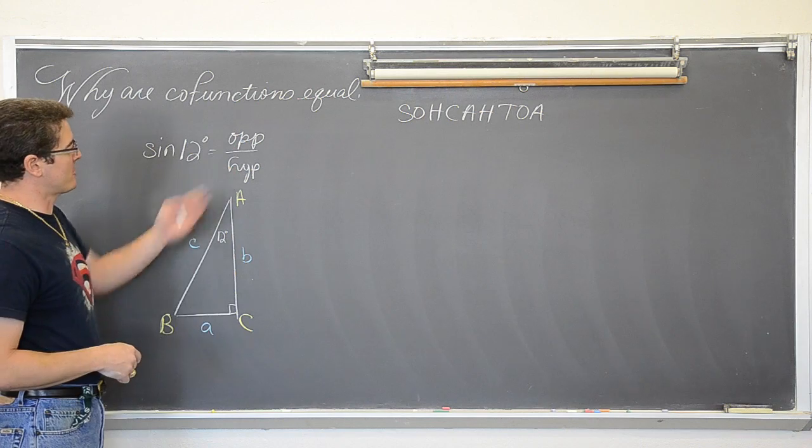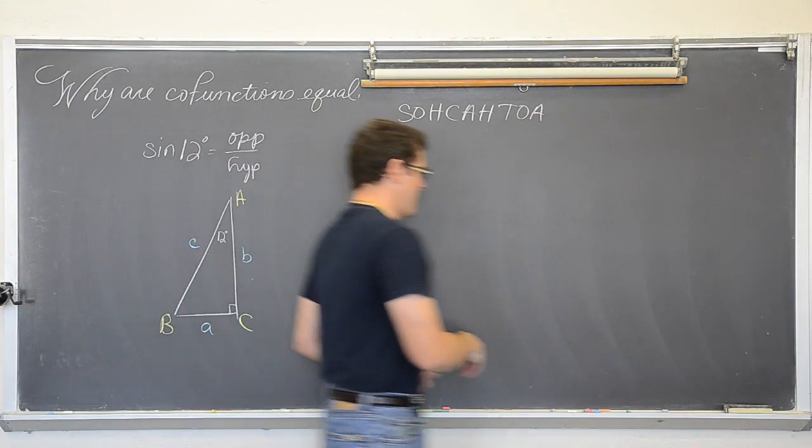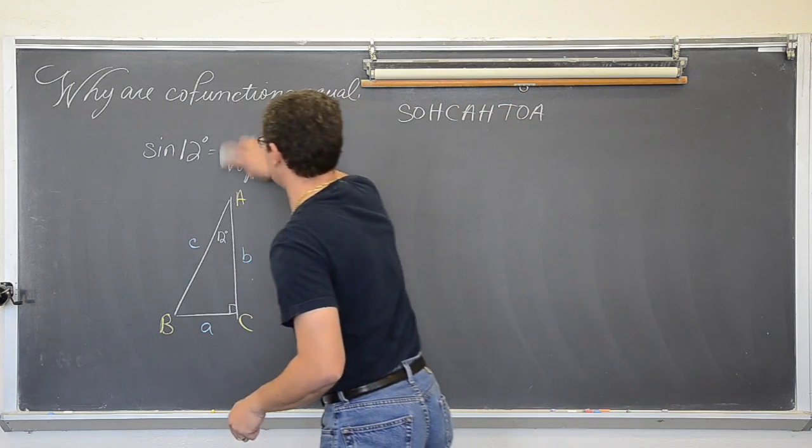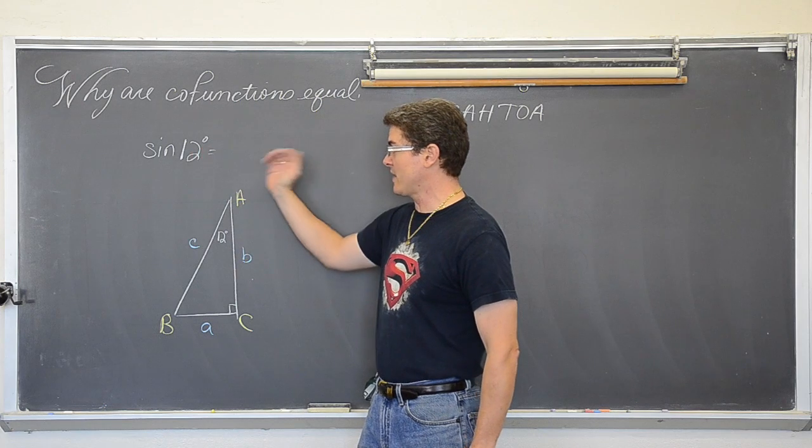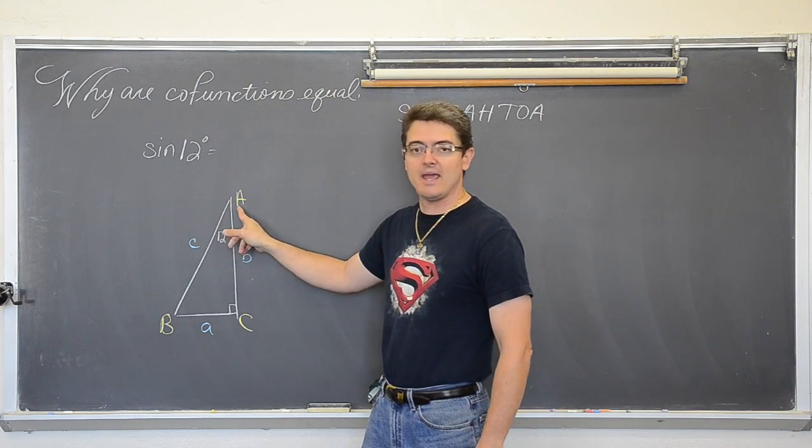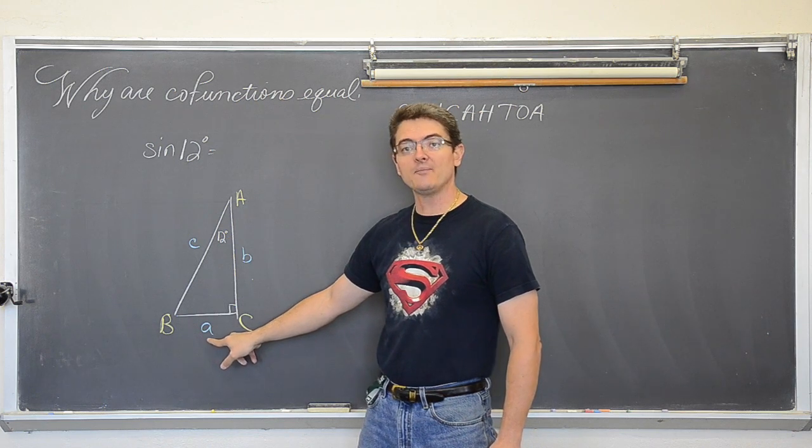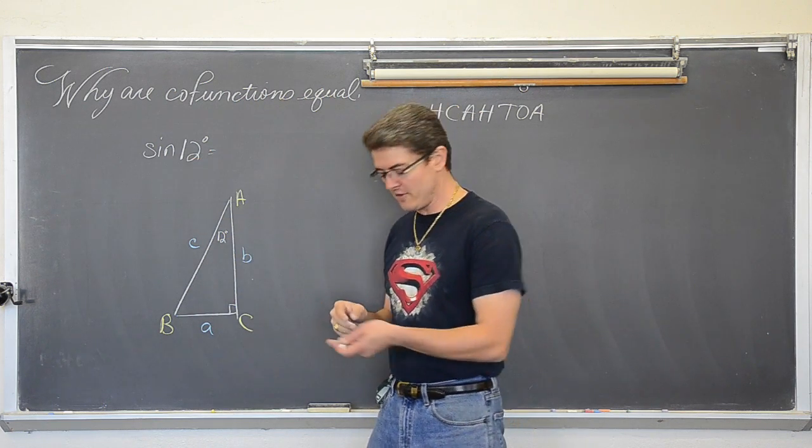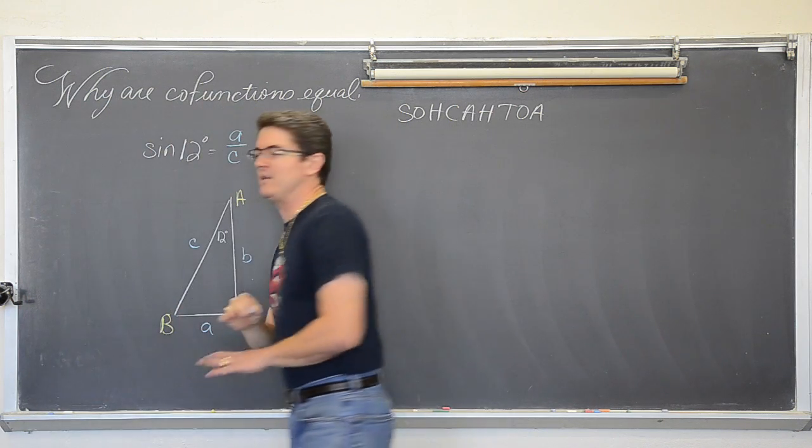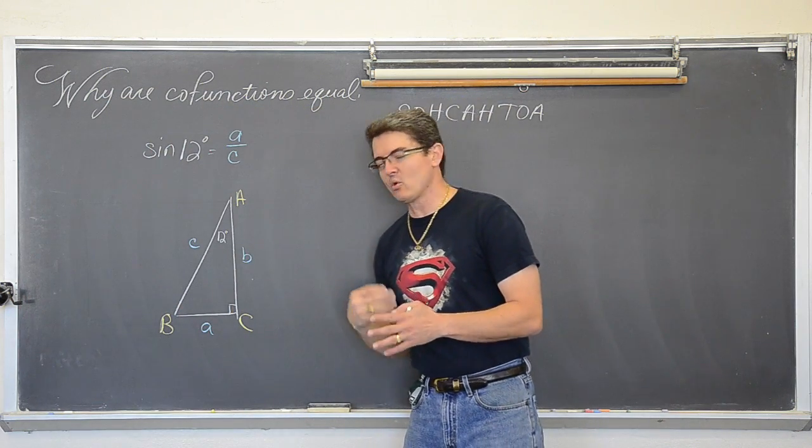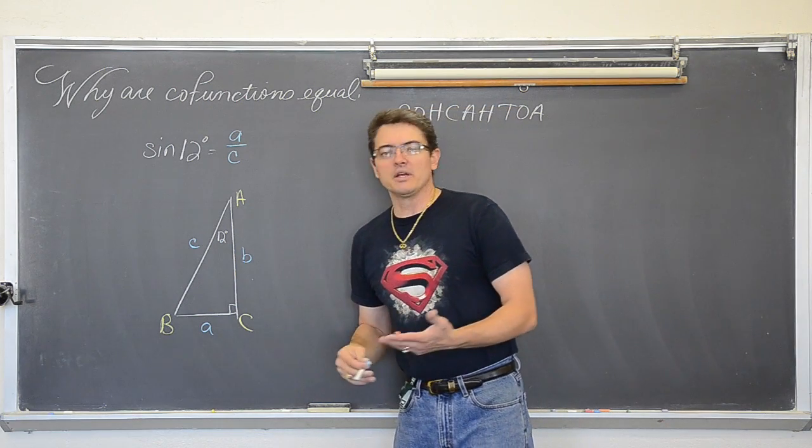So yes, sine is opposite over hypotenuse, but now that I have this triangle labeled, let's lose the opposite over hypotenuse and actually fill in the sides that are appropriate for this triangle. Now side, now I just erased it, opposite over hypotenuse. So from A, the twelve degree angle, the opposite side is A, and the hypotenuse is C. So the sine of twelve is equal to A over C. Now you would not write this at all in your actual answer. I am just explaining the concept to you.